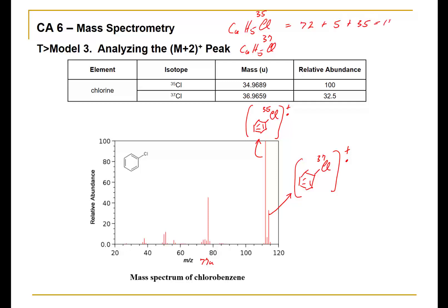In calculating the nominal mass, we would have six carbons, 72 atomic mass units, five hydrogens, five atomic mass units, plus 35, which equals 112. For chlorine-37, 72 plus 5 plus 37 gives us 114 atomic mass units. The numbers in the mass spectrum correspond to 112 and 114 atomic mass units. This peak corresponds to 77.